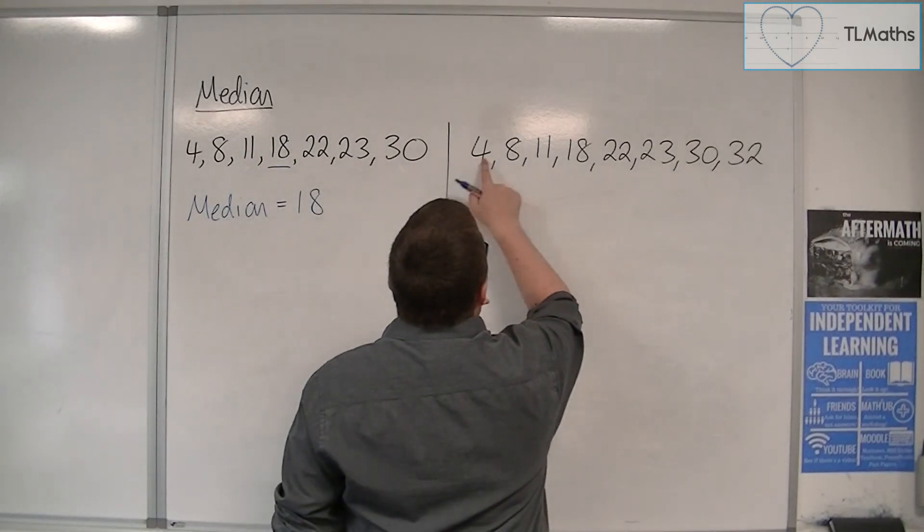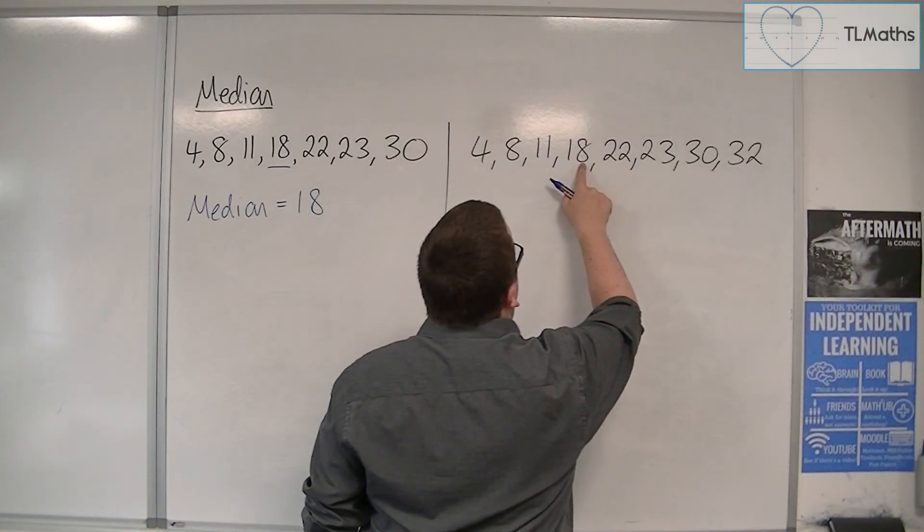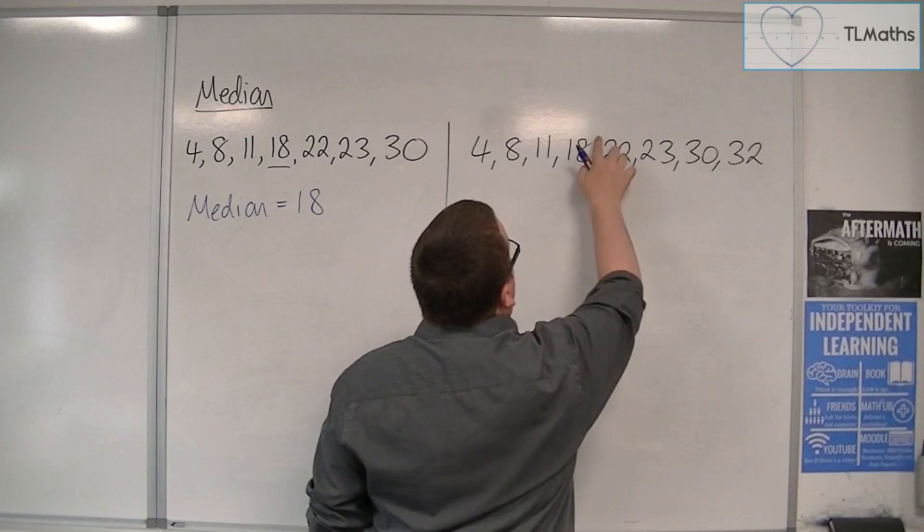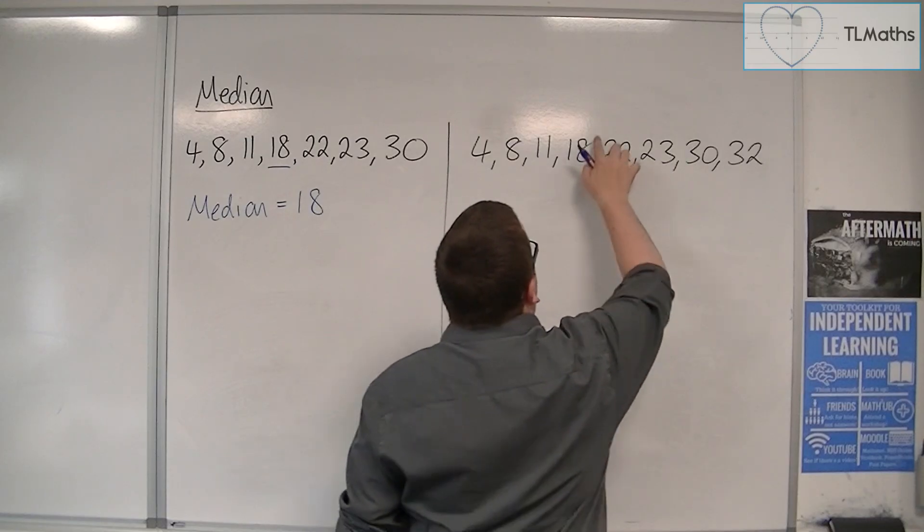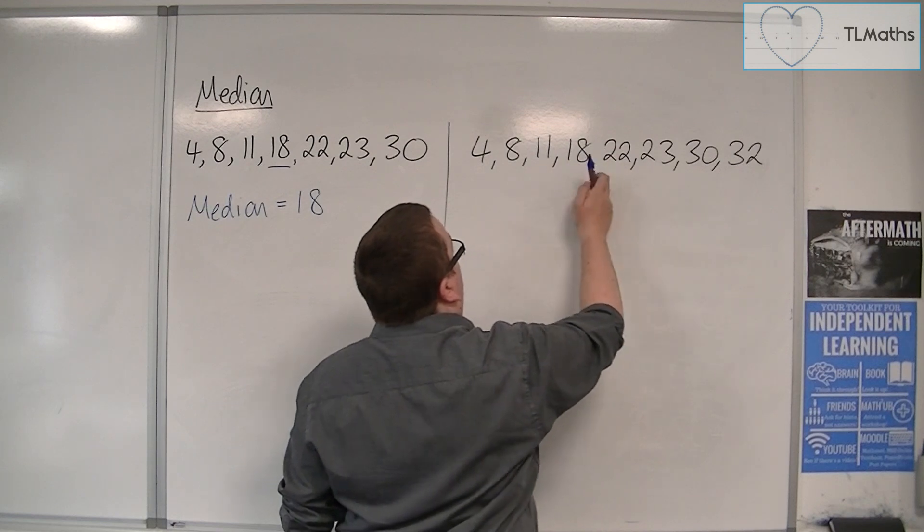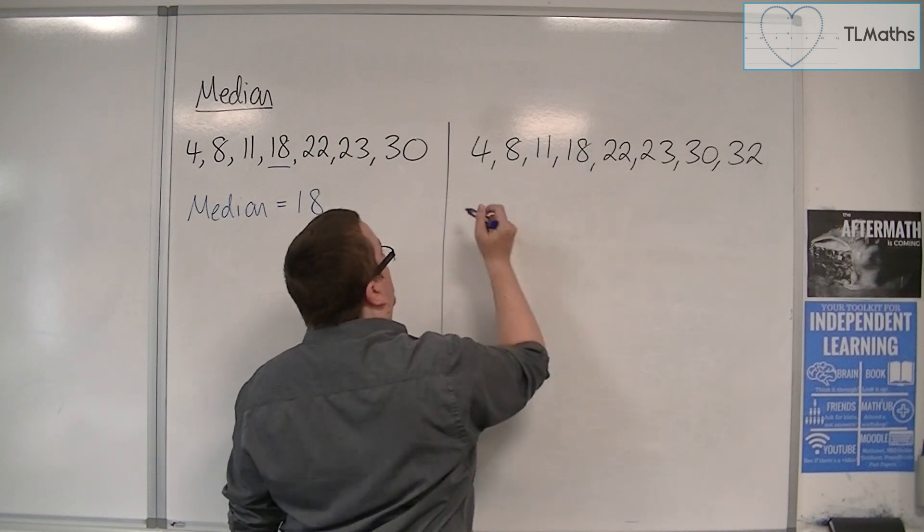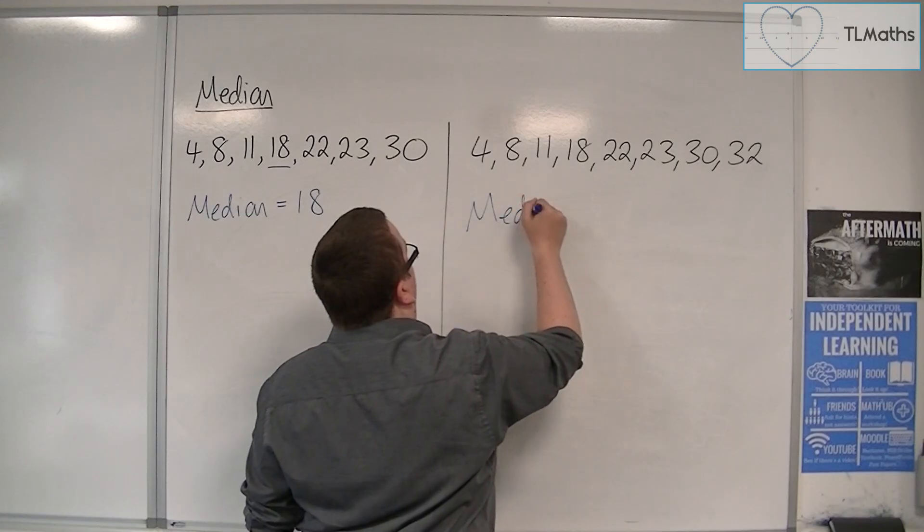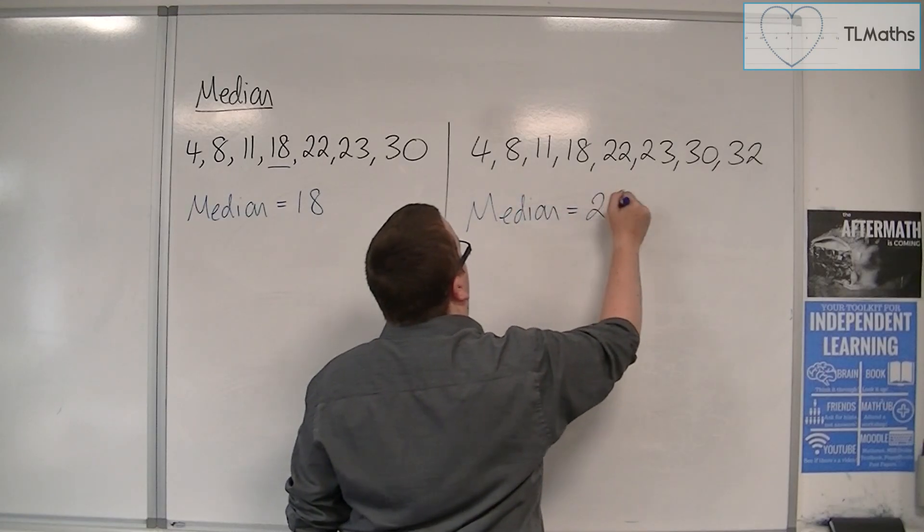So 1, 2, 3, 4, and a half. And so what we do is we choose the number that is directly in the middle of 18 and 22. So that would be 20. So the median of the second list is 20.